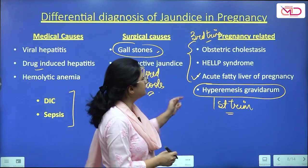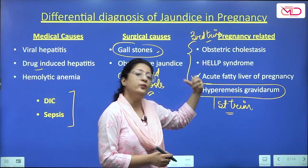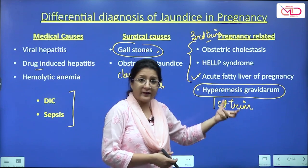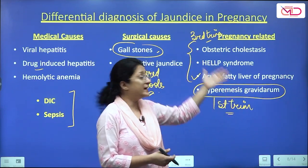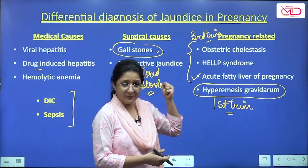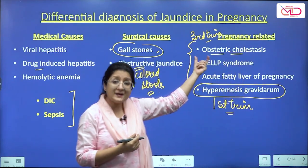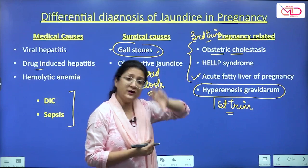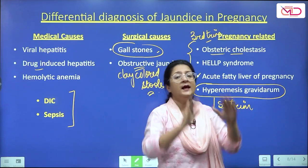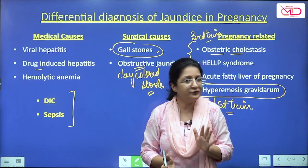You have to take history pertaining to both medical causes and pregnancy-related causes. It becomes easier when it's a booked case with medical records available — you can check for history of high BP in pregnancy, history of proteinuria, and history of itching as a predominant complaint. Take a thorough history and make up a clinical profile before proceeding further.